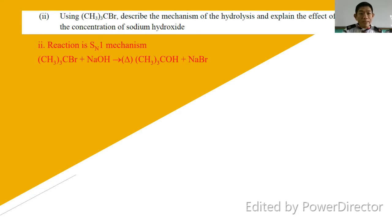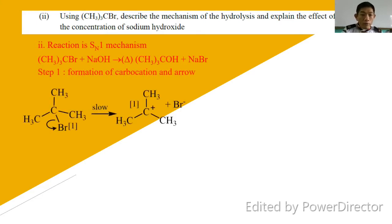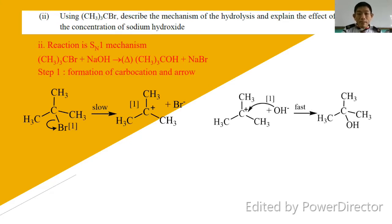So C(CH3)3Br plus NaOH under reflux gives C(CH3)3OH plus NaBr. Then describe the mechanism: Step 1 is the formation of the carbocation — you must include the arrow for each reaction. Heterolytic fission takes place between the C-Br bond to form a tertiary carbocation, which is the most stable. This is the slow step. Step 2 is how the nucleophile OH⁻ attacks the carbocation to form your products.